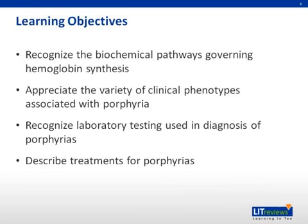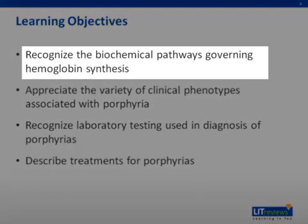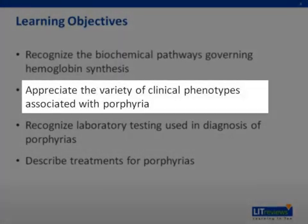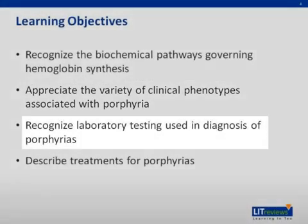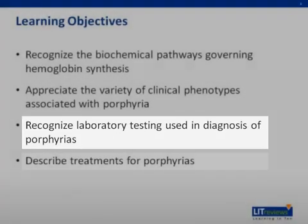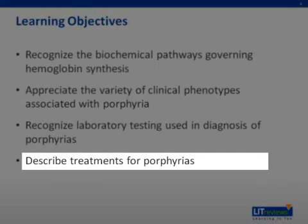Learning objectives. The goals of this presentation are: first, to understand the biochemical basis for porphyria; second, to appreciate the main subtypes of porphyria divided by clinical presentations with correlates to biochemical phenotypes; third, to develop a basic understanding of the laboratory diagnosis of porphyria; and fourth, to understand potential treatments and prevention strategies of porphyric attacks.